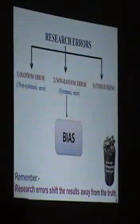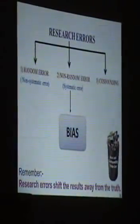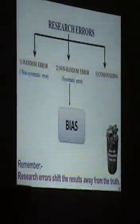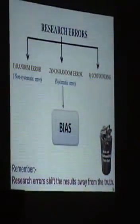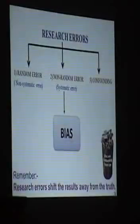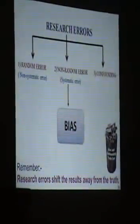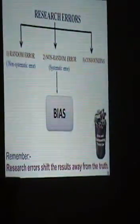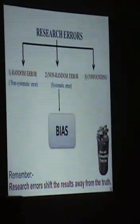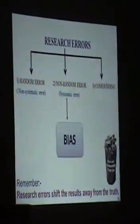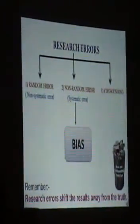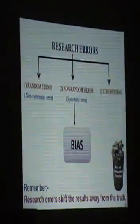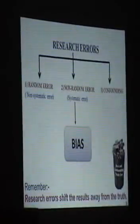The second one is non-random error. Non-random error is a very systematic error. It is so systematic that the results of the research are systematically deviated either on the positive side or on the negative side. It goes either positive or negative, very systematically. That's why it is called as bias. The third one is confounding. A very interesting error which happens in lot of research. It is an error which happens because of extraneous or extra variables. Remember, research error shifts the result away from the truth.